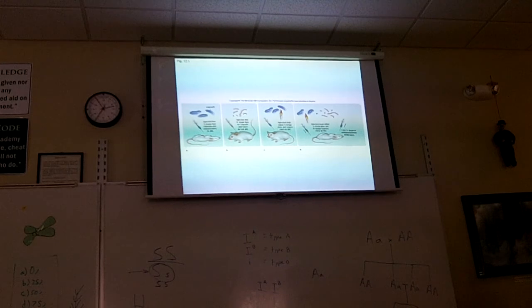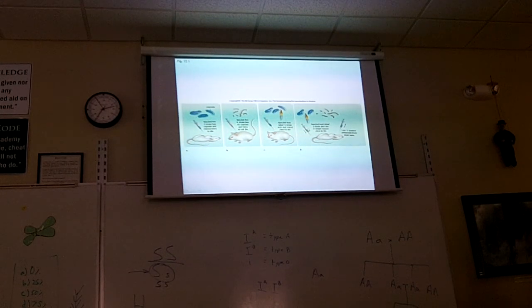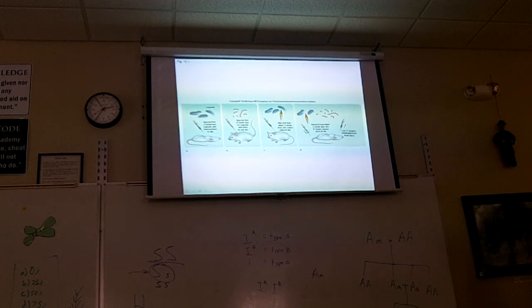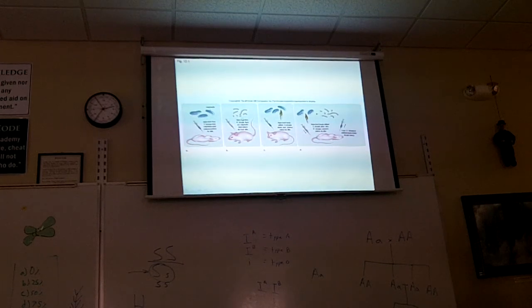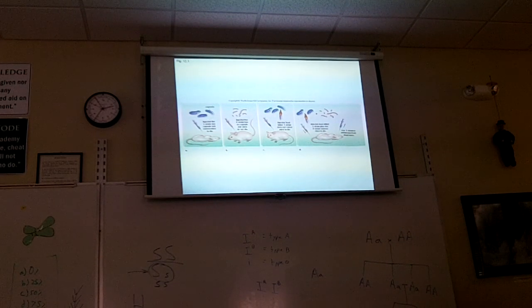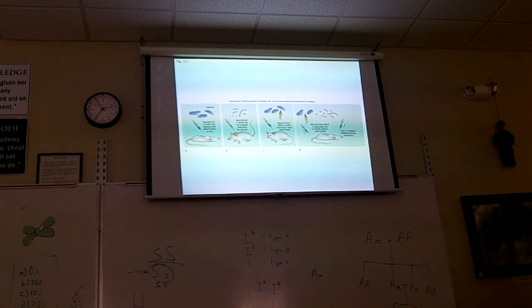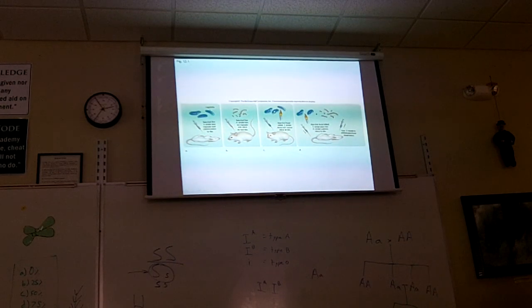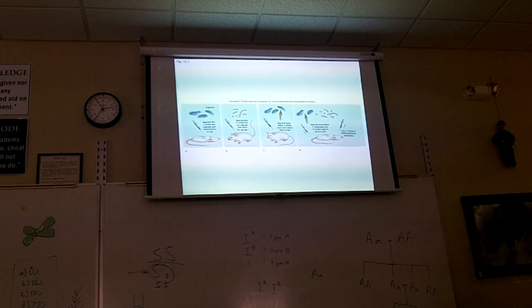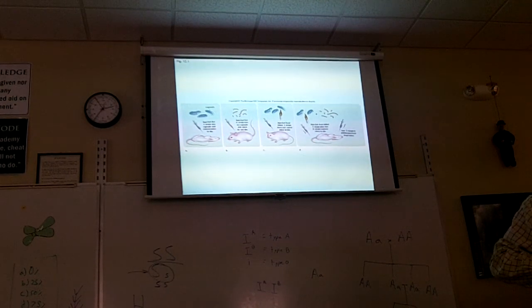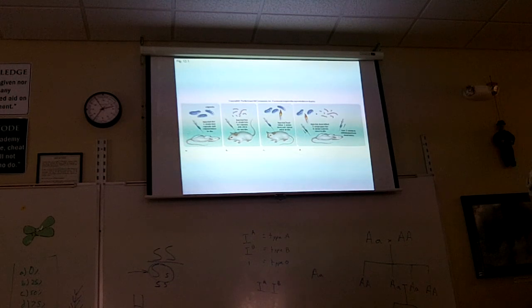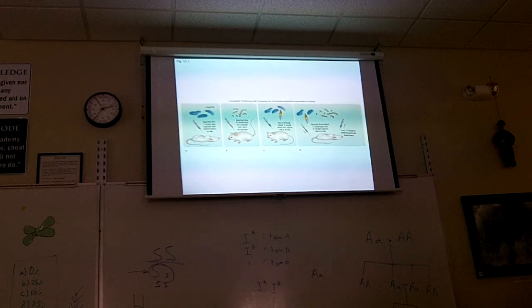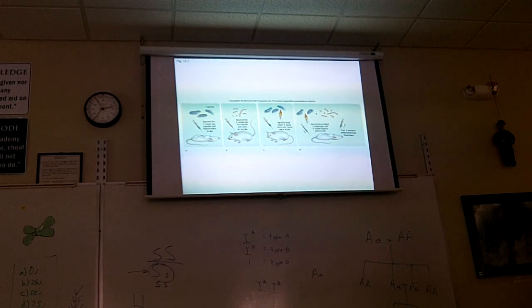The smooth capsule? The live bacteria that have that capsule kill mice if they're alive. And so he said that the R-strain bacteria had been transformed. That's why it's called the transformation experiment. They'd been transformed.